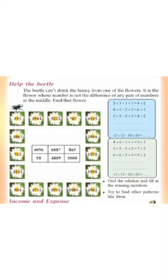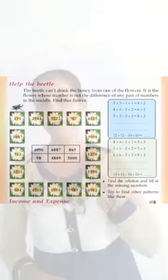This is your work: Help the beetle. The beetle can't drink honey from one of the flowers — it is the flower whose number is not the difference of any pair of numbers in the middle. Find that flower by finding the difference of all 6 numbers in the middle; the answer should appear on the outer side flowers. All of you should do this work and share with me before our next class.